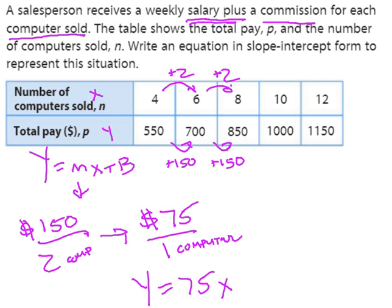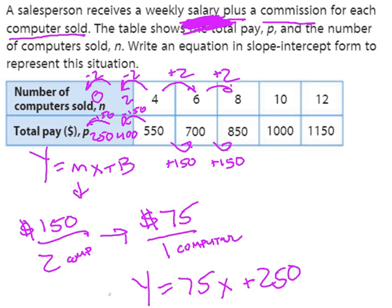There's my rate of change. In my equation, I know y equals 75 times x. Now I've got to figure out what's their weekly salary. I want to figure out how much do they make if they don't sell a single computer just for showing up to work. What I want to do is I want to continue my table but I want to go backwards. If I subtract 2, will I be at zero computers sold? The answer is no. But can I still get to zero computers sold by subtracting 2 again? And I will. That means I need to also go backwards twice by subtracting 150 twice. 550 minus 150 is 400. 400 minus 150 is 250. So I know my equation, they have a $250 weekly salary plus $75 for every computer sold. And that's it.